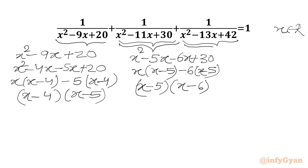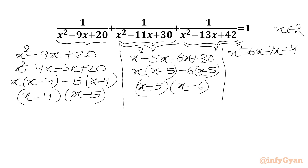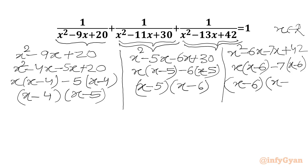Now we will consider our third denominator x squared minus 13x plus 42. We will split minus 13x and write minus 6x minus 7x, then plus 42. Taking x common from the first two terms gives (x minus 6), and minus 7 is common from the last two, giving (x minus 6) again. So our factorization would be (x minus 6)(x minus 7).